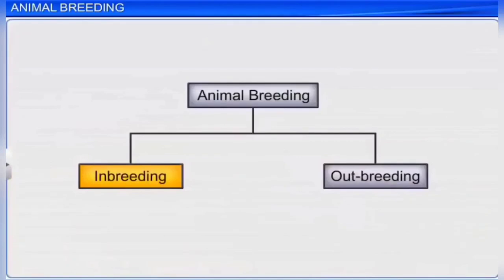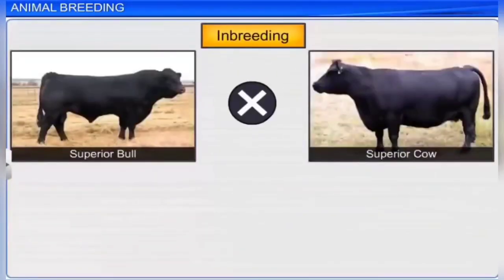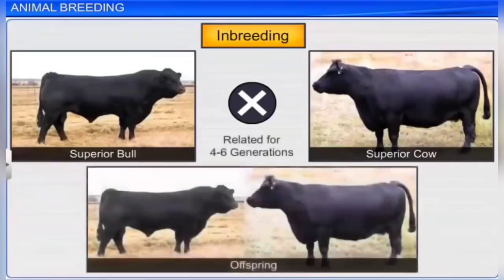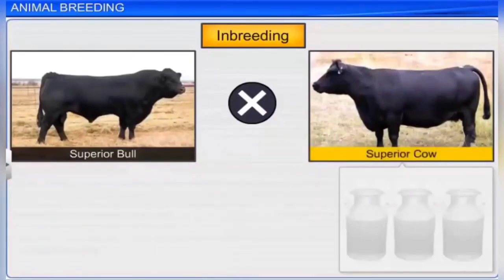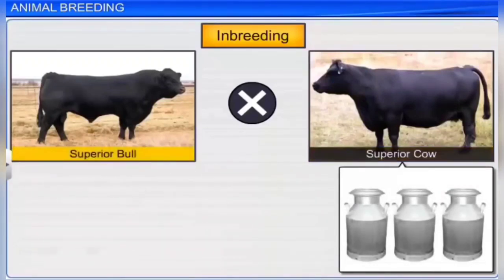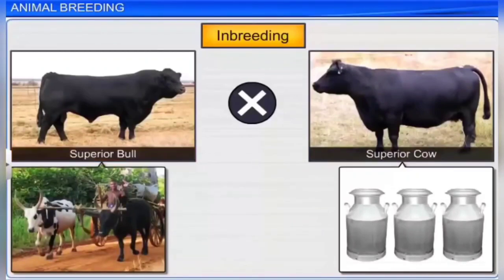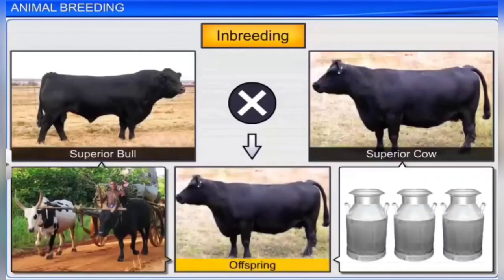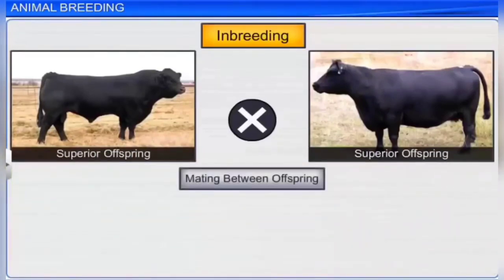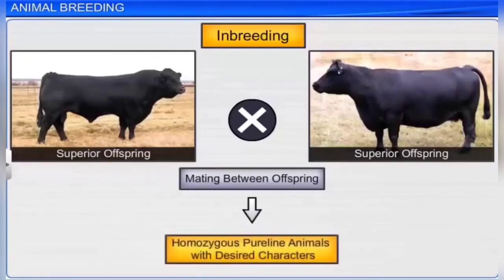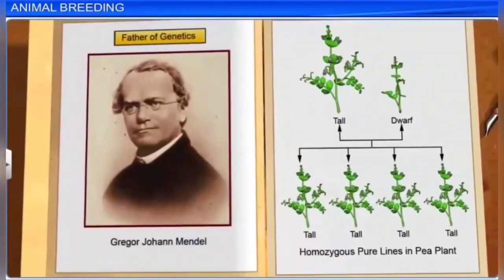Animals selected for inbreeding are of superior quality and closely related for four to six generations. A superior quality cow produces more milk, and a superior bull is a strong draft animal that gives rise to superior offspring. Inbreeding mating is carried out between offspring with superior qualities. Thus, inbreeding increases homozygosity, resulting in a pure line of animals with desired characters — similar to Mendel's experiment yielding homozygous pure lines in pea plants.